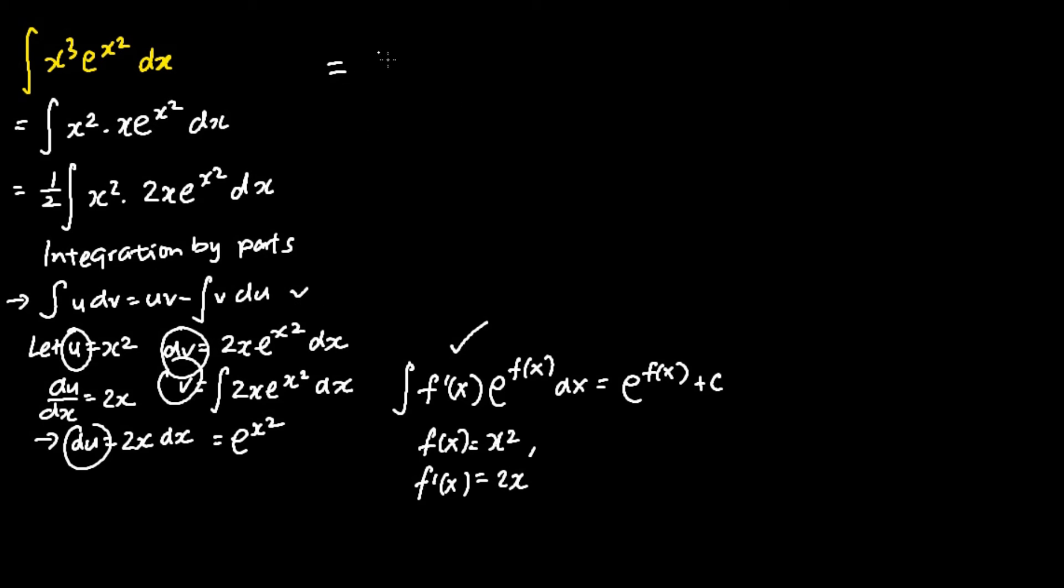I get the following: half open square bracket, my u is x squared, my v is e to the power of x squared, subtracting away the integral of my v, which is e to the power of x squared, du is 2x dx.